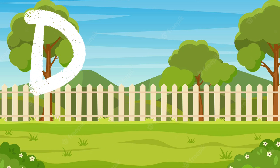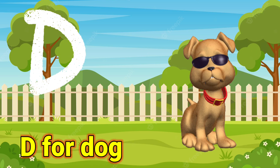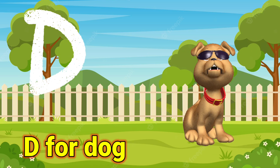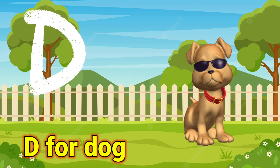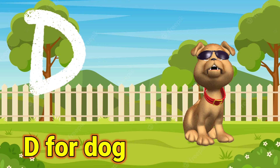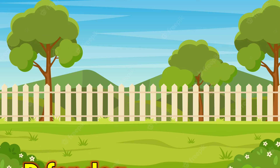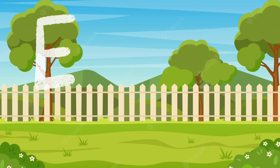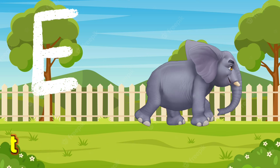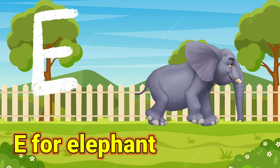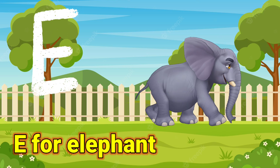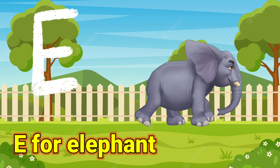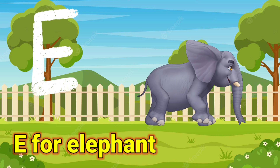D. D for dog. Dog means kutta. E. E for elephant. Elephant means haati.